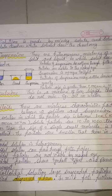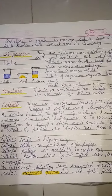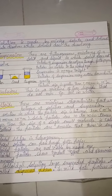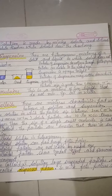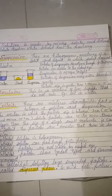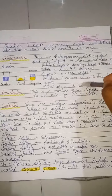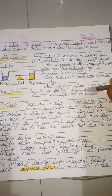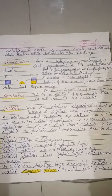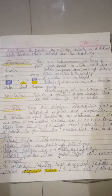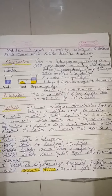Suspension is opaque to light and is not transparent. Particles of suspension may settle down due to gravity. Their particle size is greater than 1000 nanometers. This is a very important factor — you should know the particle size and characteristics of all these types of mixtures, especially for your NTSE exams.